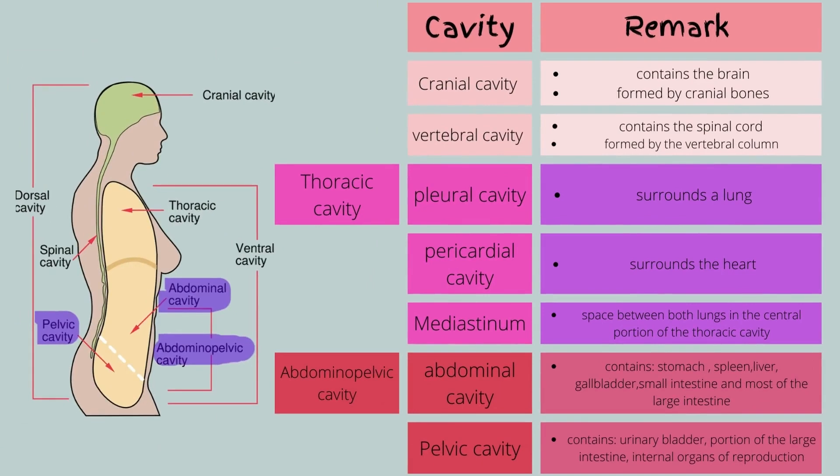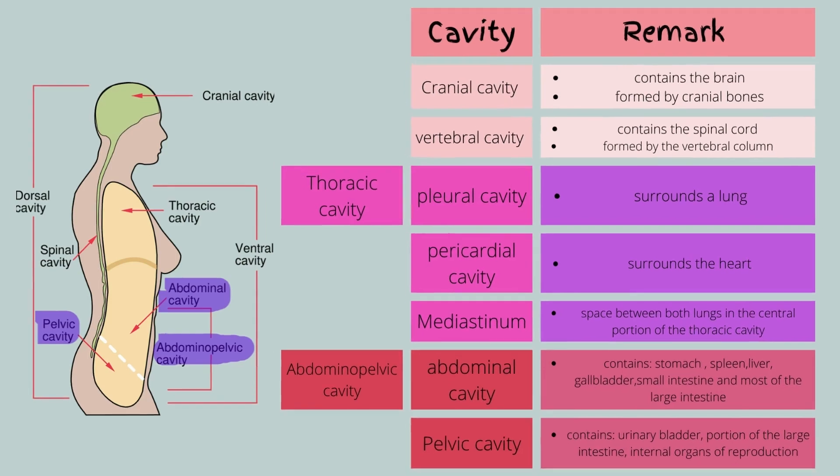For the abdominopelvic cavity, it is subdivided into two cavities. The abdominal cavity contains the stomach, spleen, liver, gallbladder, small intestine, and a large portion of the large intestine. The pelvic cavity houses the urinary bladder, a portion of the large intestine, and internal organs of reproduction.